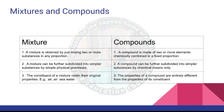Differences between mixtures and compounds: A mixture is obtained by just mixing two or more substances in any proportion. A compound is made of two or more elements chemically combined in a fixed proportion. A mixture can be further subdivided into simpler substances by simple physical processes. A compound can be further subdivided into simpler substances by chemical means only. The constituents of a mixture retain their original properties — example: air, seawater. The properties of a compound are entirely different from the properties of its constituents.